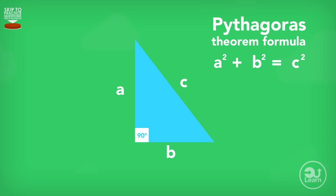So the formula tells us that if we square the distance A and add it to the square of distance B, the answer will be the distance C squared.